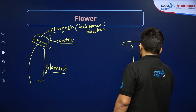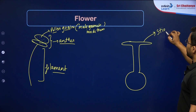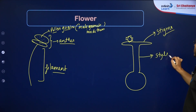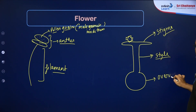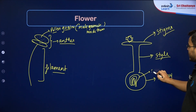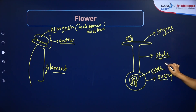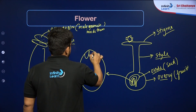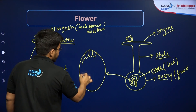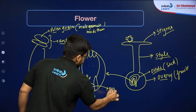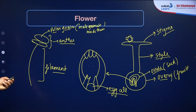The female part — the gynoecium — has this kind of structure. The uppermost part is the stigma, where pollen grains land. Below that is a tube-like structure called the style, through which male gametes travel down to the ovary. Inside the ovary is a structure called the ovule. The ovule later forms the seed, and the ovary later forms the fruit. Inside the ovule is the embryo sac, which is the female gametophyte containing the egg — the female gamete.